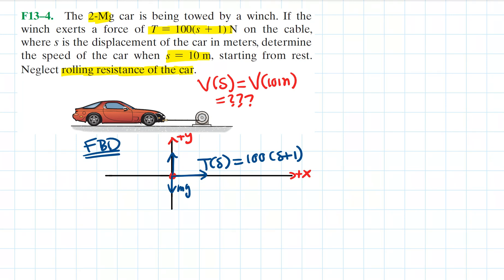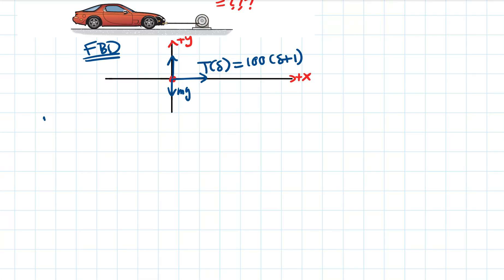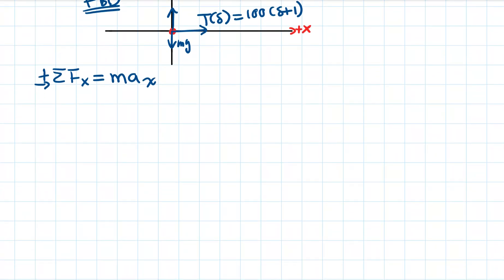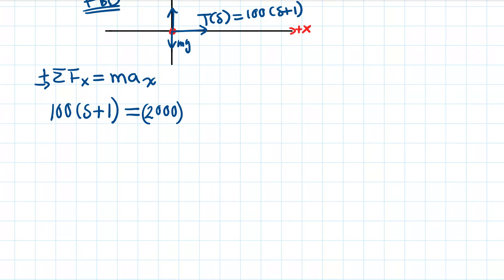There is no movement in the y-direction and we are not considering friction, so we go directly to the sum of forces in the x-direction. Applying Newton's second law: the sum of forces in x equals mass times acceleration in x. The only force in the x-direction is the cable tension, so 100(s + 1) equals 2000 kilograms times acceleration in the x-direction.